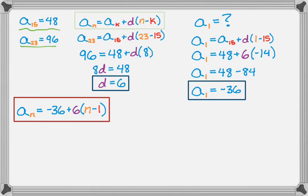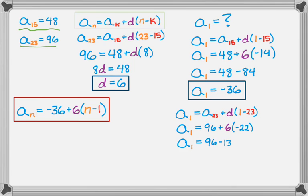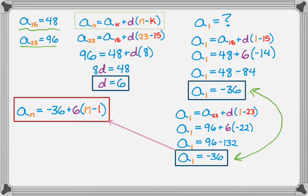The formula is aₙ = -36 + 6(n-1). But what if I used the other point? If I say a₁ = a₂₃ + d(1-23), and d = 6, I get a₁ = 96 + 6(-22) = 96 - 132 = -36. No matter how I do it, I get the same value of a₁. That has to happen, and it means I'll get the same formula, which is good.